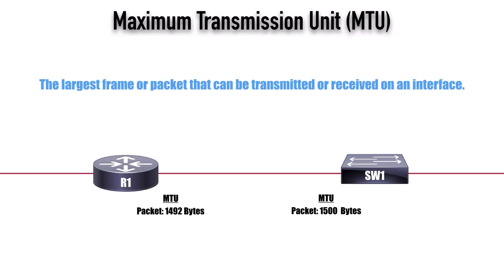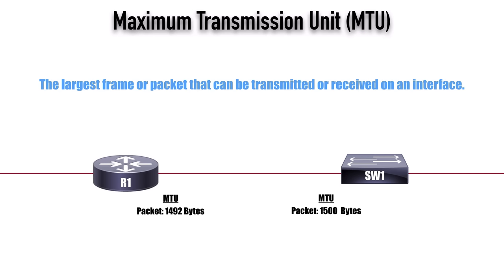For now, realize that we have mismatched MTU sizes here at Layer 3. What happens if SW1 sends a packet into R1? R1 says, sorry, I'm not able to receive this because it's larger than my MTU size. Not every packet from SW1 will exceed the MTU — it can send smaller packets, that's no problem. But if it did send at the maximum size — a 1500-byte packet — R1 says it cannot accommodate that. What does it do instead? Since it's too big at 1500 bytes, it's going to fragment it — chop it up, send smaller packets called fragments. They'll each get their own header and be transmitted out.